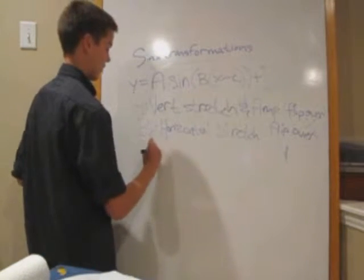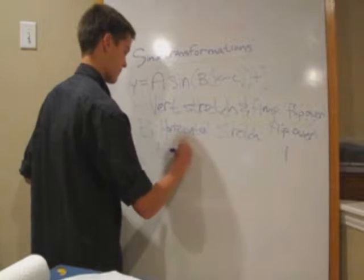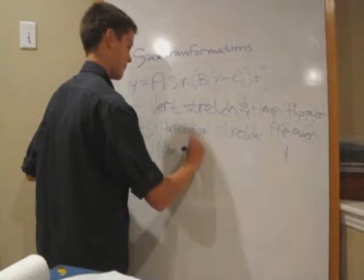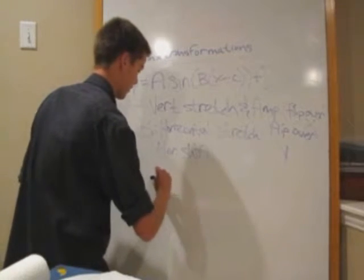The c value is the horizontal shift. And the d value is the vertical shift.